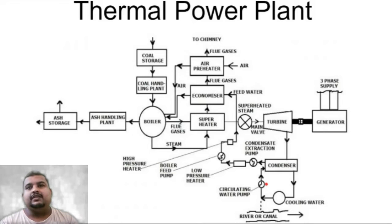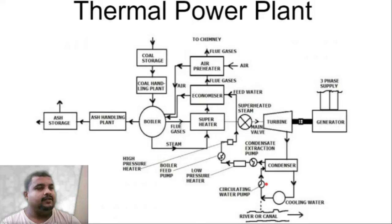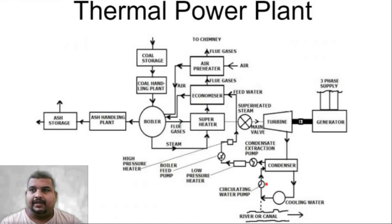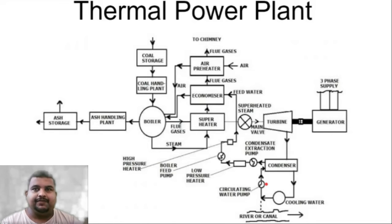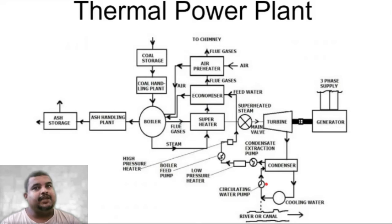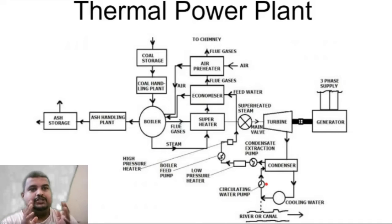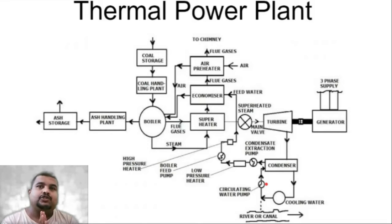This entire sequence — condenser, CEP, low pressure heater, BFP, HP heater, economizer, and then the boiler — is called the feed water cycle. The feed water cycle is now complete up to the boiler, where the water needs to be heated. For that purpose, you require a burning process.